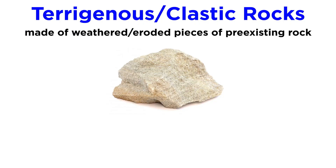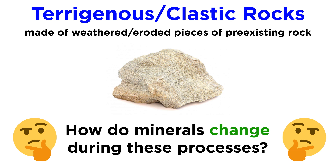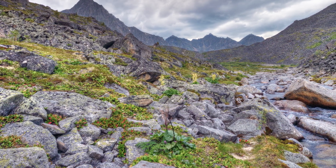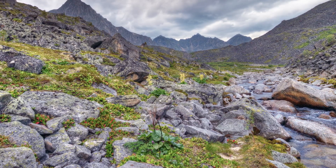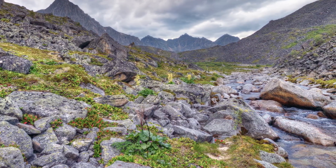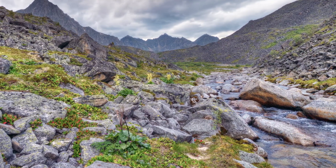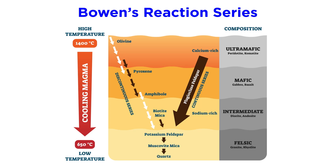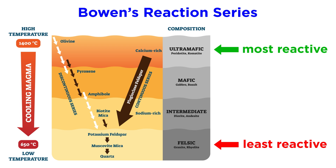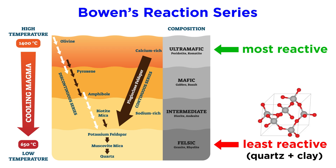Since these rocks are made of pieces of pre-existing rock that have been weathered, eroded, and transported, we must consider how the common terrigenous minerals change during these processes. Any rock or sediment exposed at the surface will be under constant attack from acidic precipitation and groundwater. Therefore, the minerals that survive and make it to the depositional area must be relatively unreactive. The reactivity of the silicate minerals at the surface tends to follow Bowen's reaction series, with the mafic minerals at the top being highly reactive, and the felsic minerals at the bottom being least reactive, the most stable of them being quartz and the clay minerals.